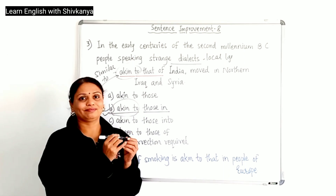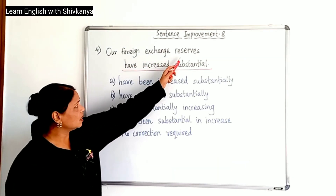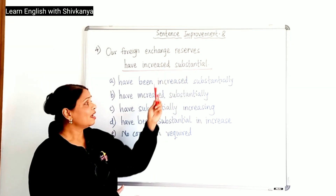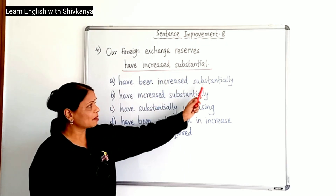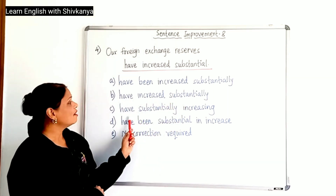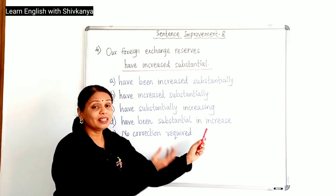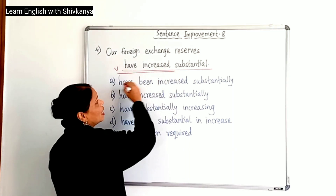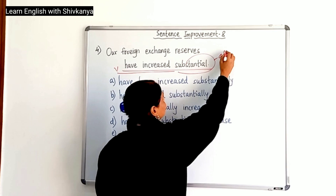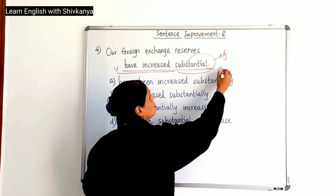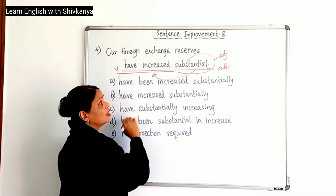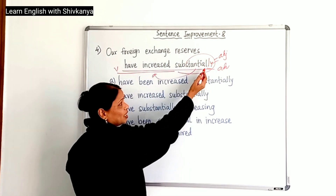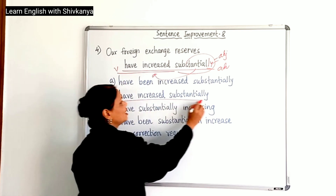Sentence number 4: Our foreign exchange reserves have increased substantial. The wrong phrase is 'have increased substantial,' and the options are: have been increased substantially, have increased substantially, have substantially increasing, have been substantial in increase, and no correction required. Very simple. 'Have increased' is a verb and 'substantial' is an adjective here. Always remember we need an adverb to qualify the verb. Put an -LY suffix to the adjective and you will get an adverb. So 'have increased substantially' is the correction — B is the correct option.